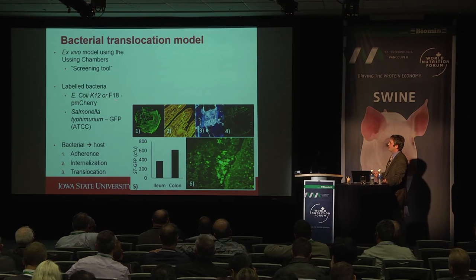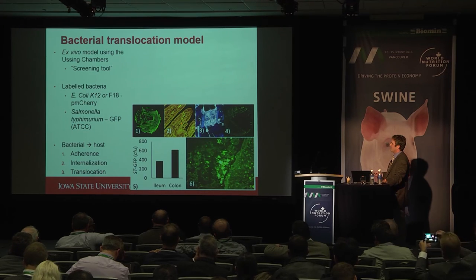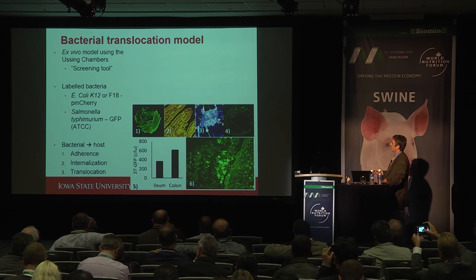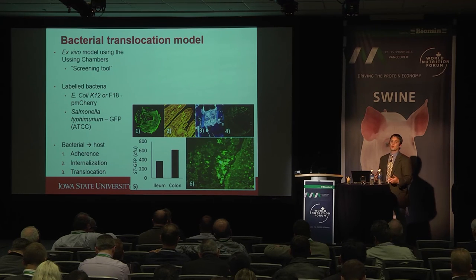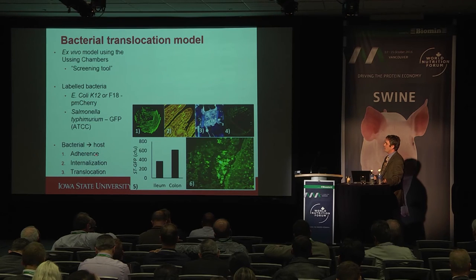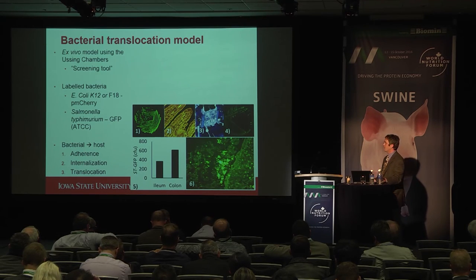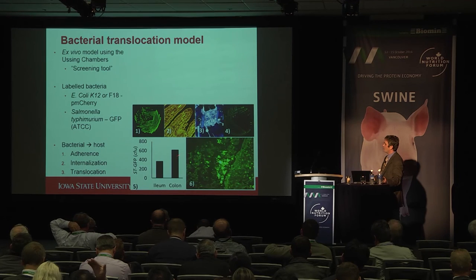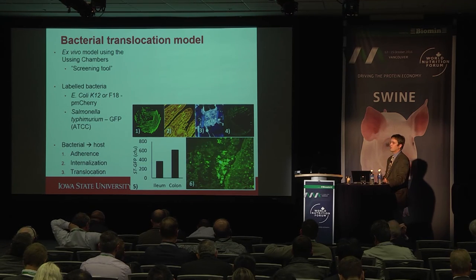We've also been using fluorescently tagged E. coli K12, F18, or Salmonella typhimurium — plated out, then clamped in intestinal epithelial tissues in modified Ussing chambers — to look at mucosal-to-serosal translocation via colony forming units and measure attached bacteria. This model allows us to study adhesion, internalization, and translocation of live bacteria across intact intestinal epithelium. We do see increased colony forming units between the colon and ileum with Salmonella typhimurium, showing a differential response between small and large intestine in translocation.